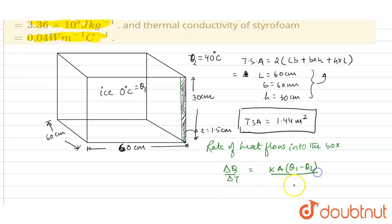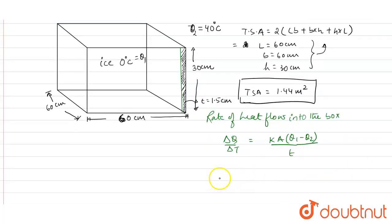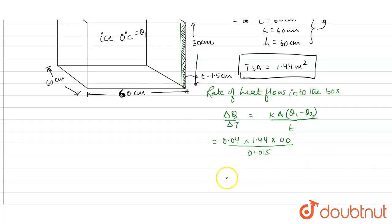From here, putting the values: k is 0.04, area is 1.44, the temperature difference is 40 divided by the thickness 0.015 meter. From here what we get is the rate of heat flow to the box comes as 154 watt.